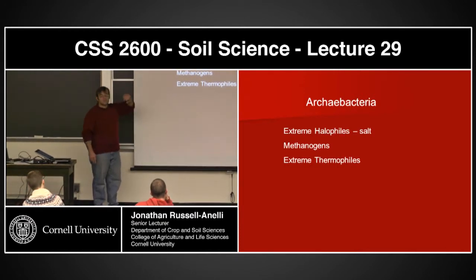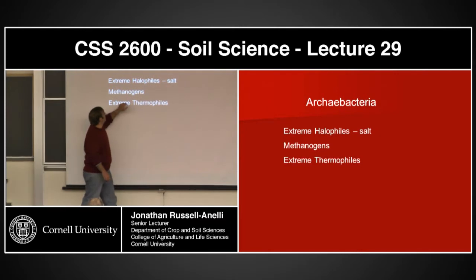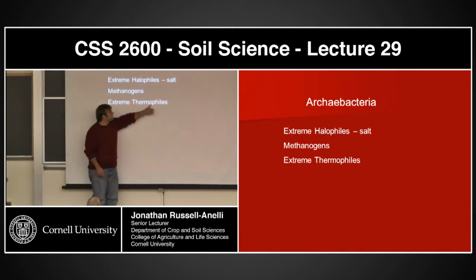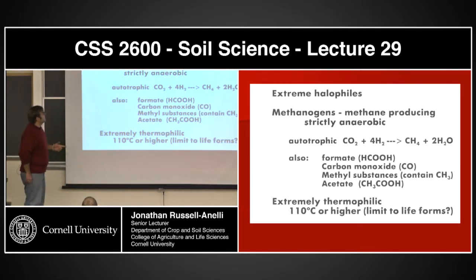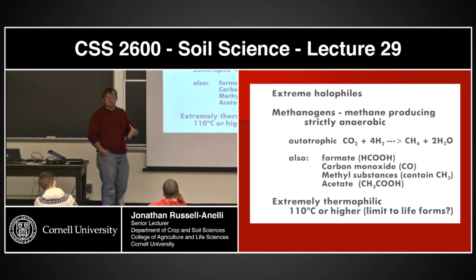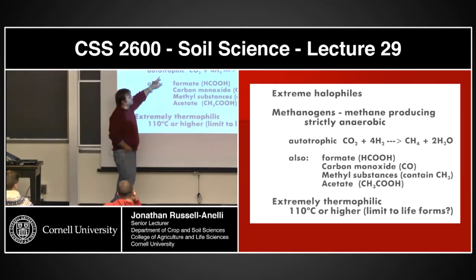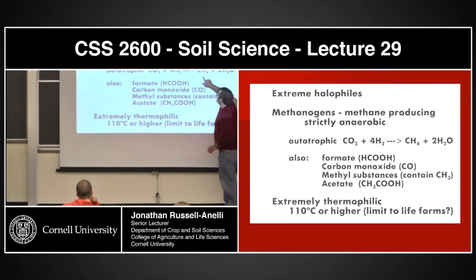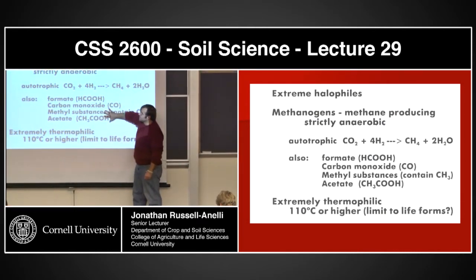The archaea are broken up into three large groups: the extreme halophiles (halo meaning salt), the methanogens, and the extreme thermophiles. Methanogens are really interesting — they're strictly anaerobic and produce methane. They're autotrophic, taking CO₂ and protons and making methane and water. They're also associated with carbon monoxide, formate, methyl substances, and acetate.